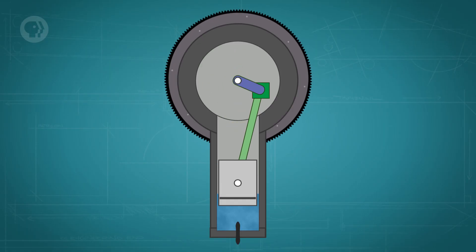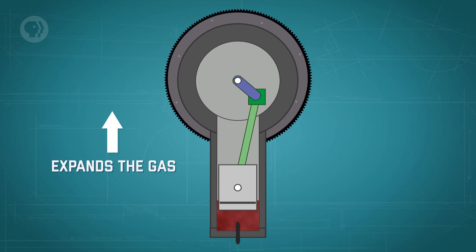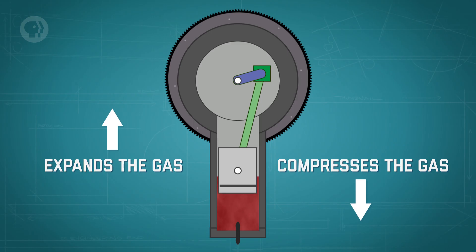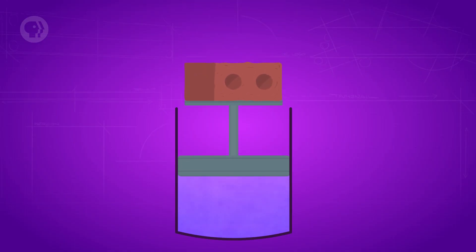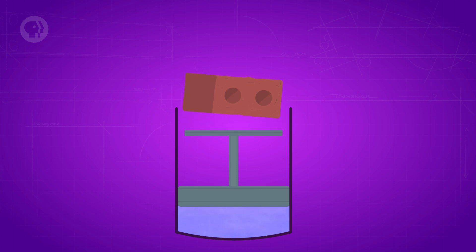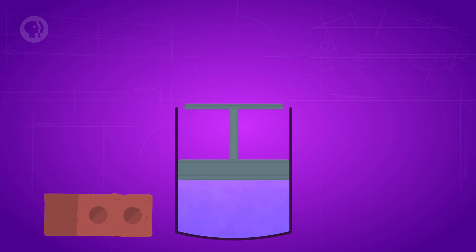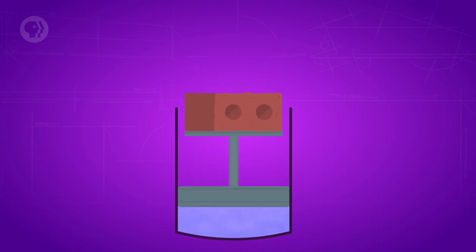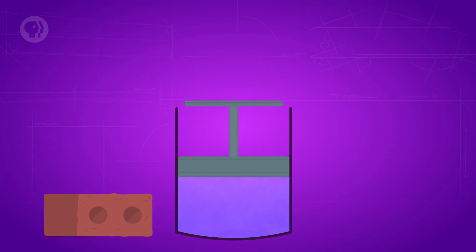Let's go back to that piston. You want it to move up and down in the cylinder to turn a crank and generate power, with gas in the cylinder. Bringing the piston up expands the gas; pushing it down compresses it. When compressed, the gas expands on its own, but won't compress again unless a force is applied — just like a stress ball. Say the force compressing the piston comes from a brick. When you remove the brick, the gas expands freely and the piston rises. But to compress the gas again and push the piston back down, you need to lift the brick back on top. Since the system needs outside work to return to where it was, this process is irreversible.